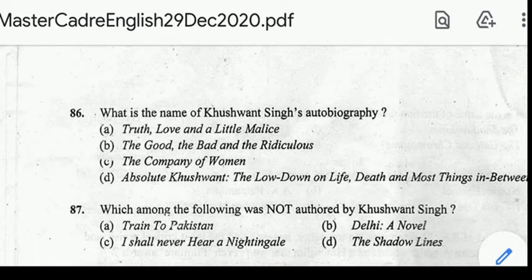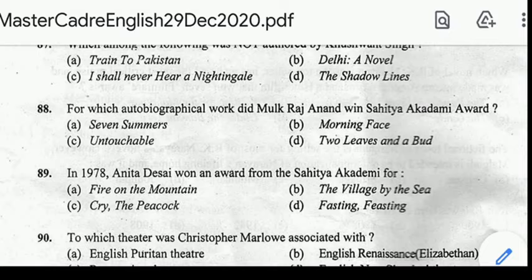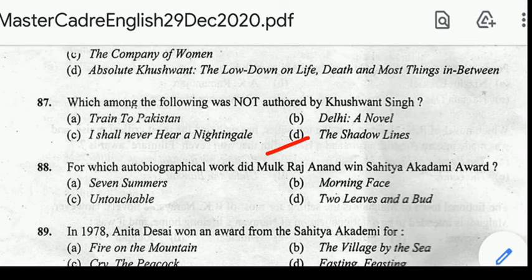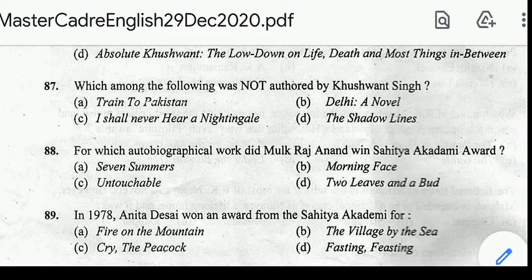Number 87: which among the following was not authored by Khushwant Singh? Correct answer: option D, The Shadow Lines — written by Amitabh Ghosh. Number 88: for which autobiographical work did Mulk Raj Anand win the Sahitya Akademi Award? Correct answer: option B, The Morning Face, published in 1968.